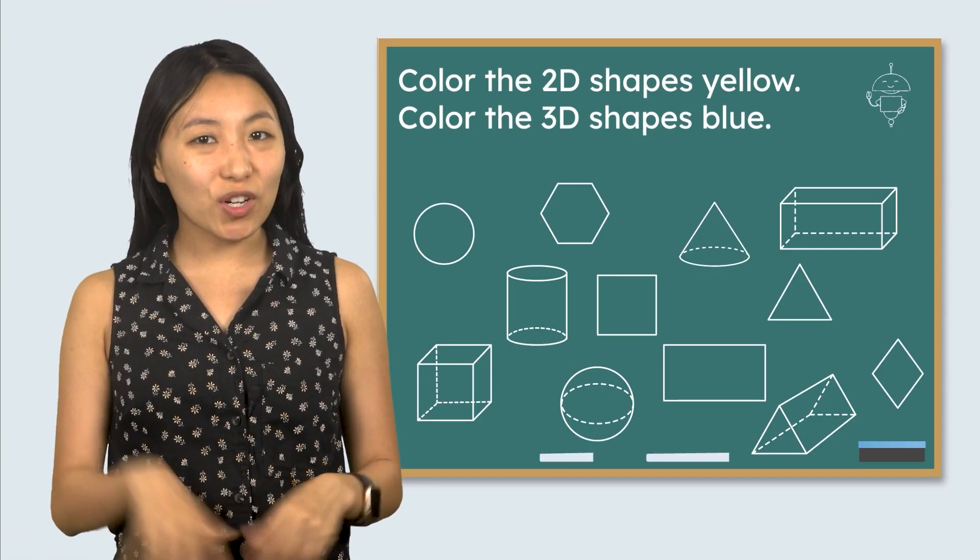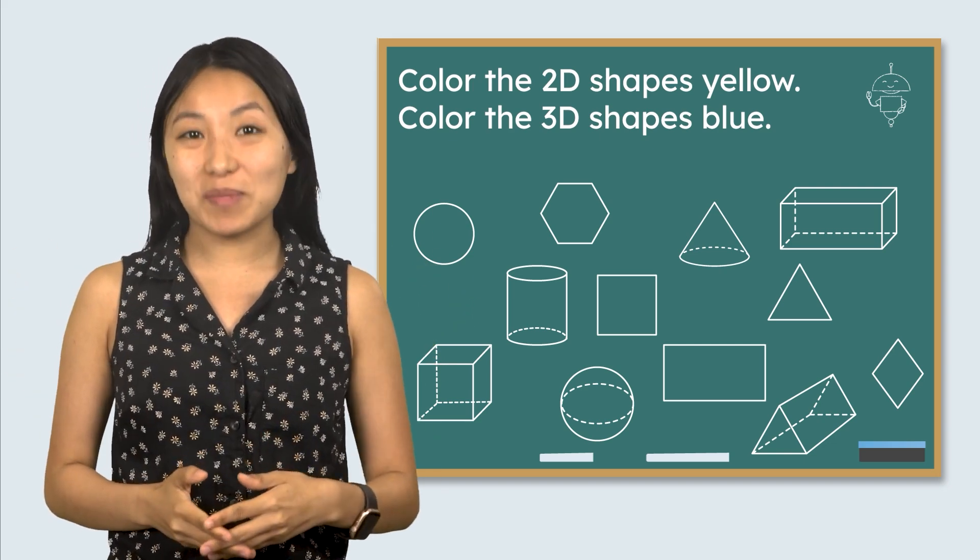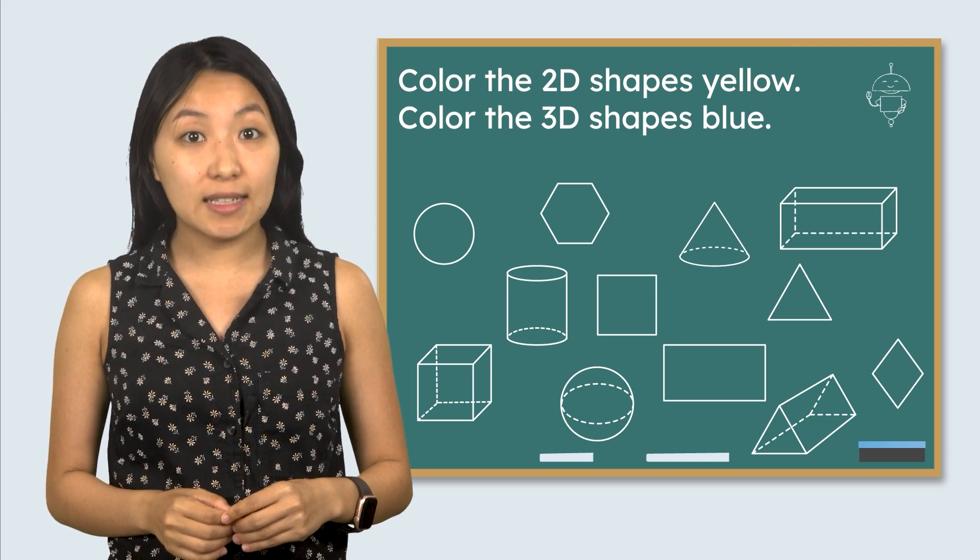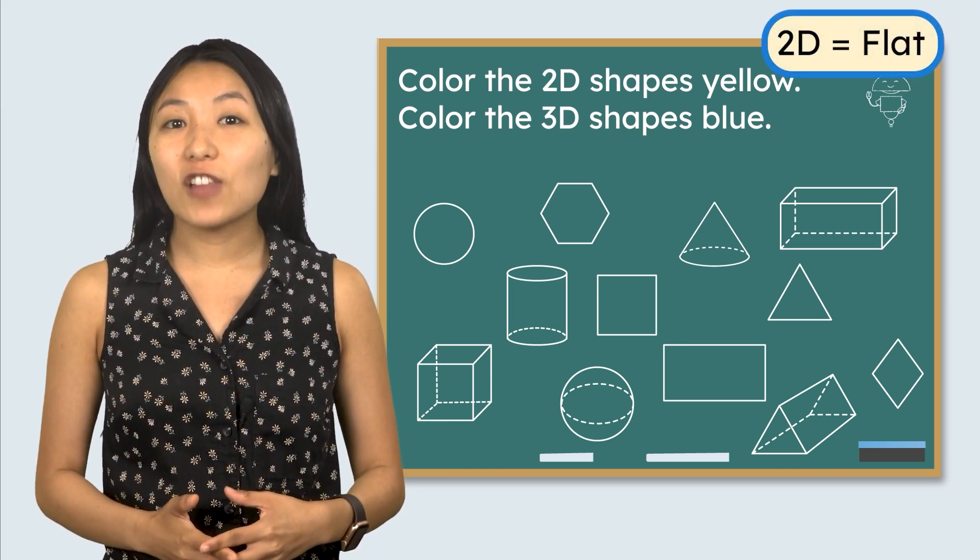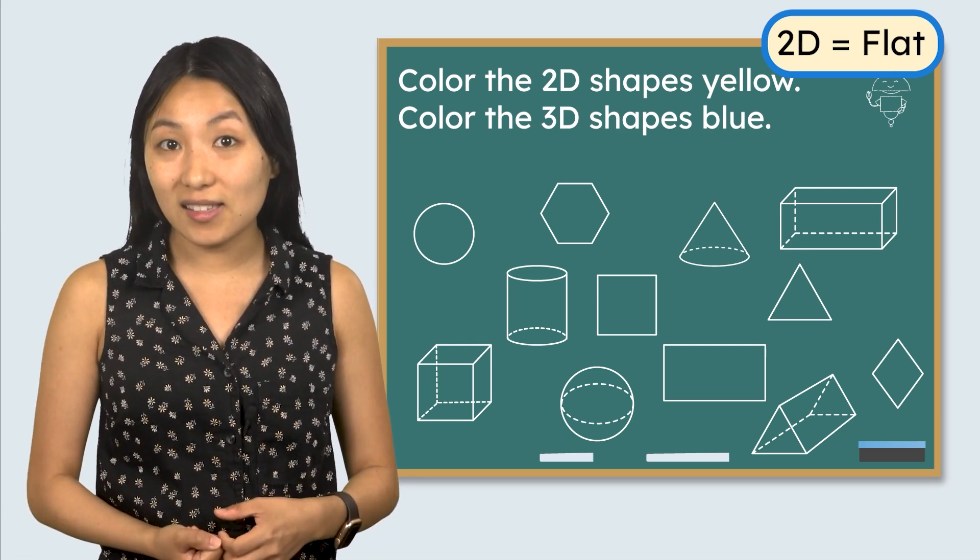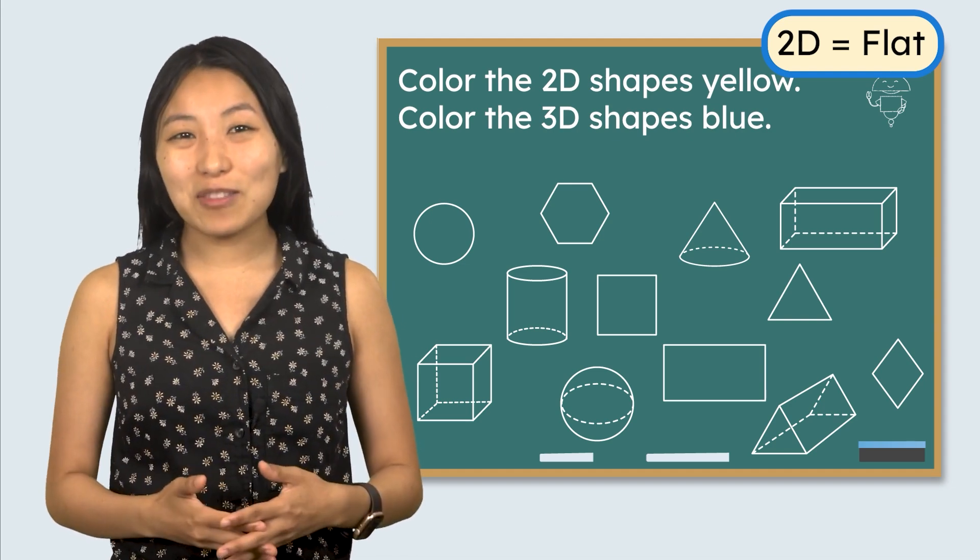I think these new words, 2D and 3D, will help us solve Mia's math mystery. Another word for a flat shape is 2D. That stands for two-dimensional. 2D shapes are flat and recognized by the number and length of their sides. Let's look for the 2D shapes we already know in our math mystery.